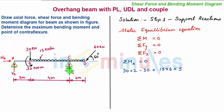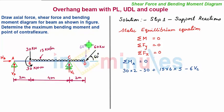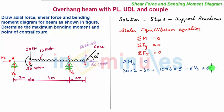There is an anticlockwise moment due to the vertical support reaction VC, which acts at a distance of 2 + 4 = 6 meters from A, giving −6VC. The vertical component of the inclined 60 kN force is 60 sin 60, and its horizontal component is 60 cos 60. The vertical component causes a clockwise moment, acting at a distance of 2 + 4 + 2 = 8 meters from A, giving +60 sin 60 × 8.